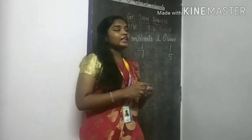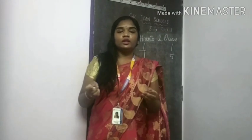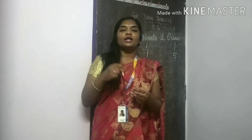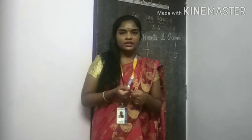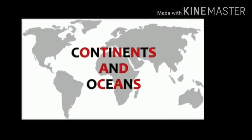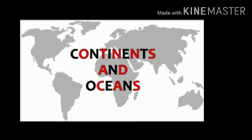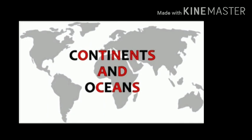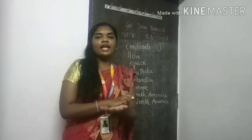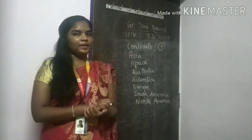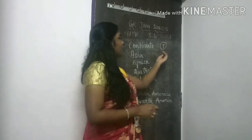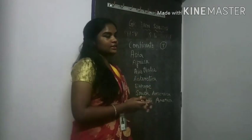Oceans are the larger water bodies compared to other water bodies. Continents are the land masses that are present on the earth. There are 7 continents.